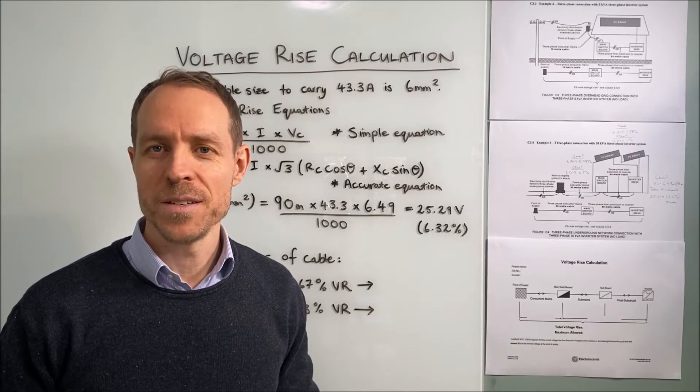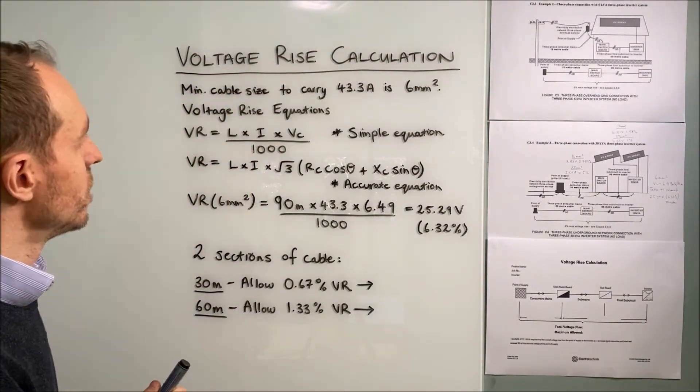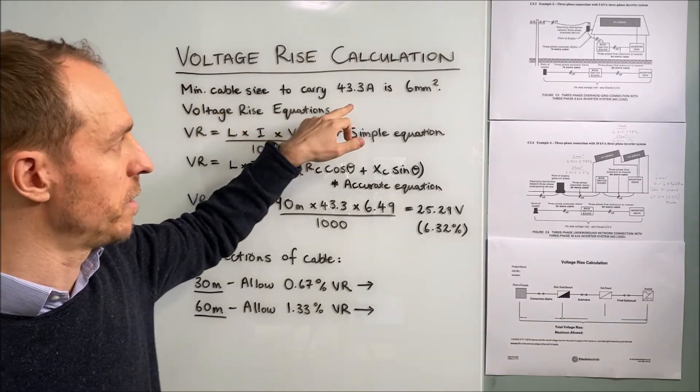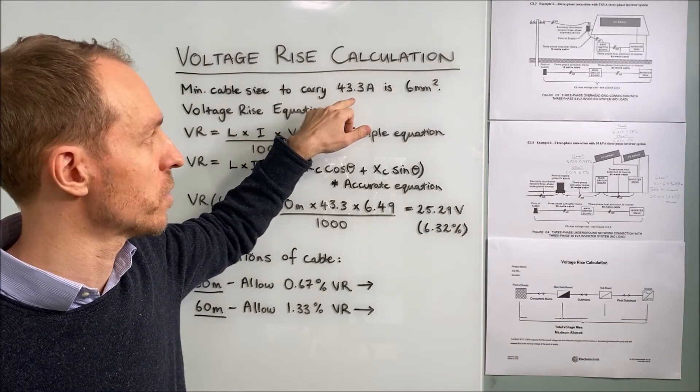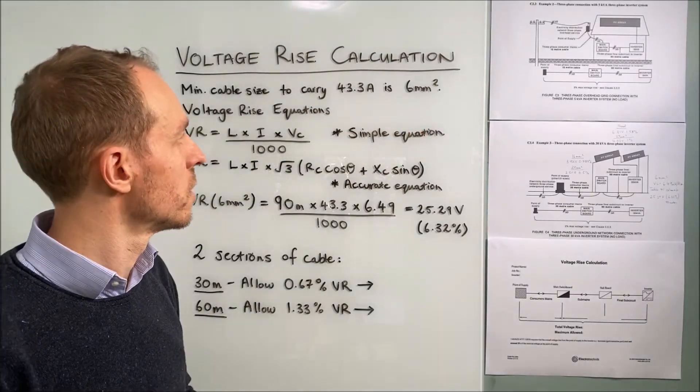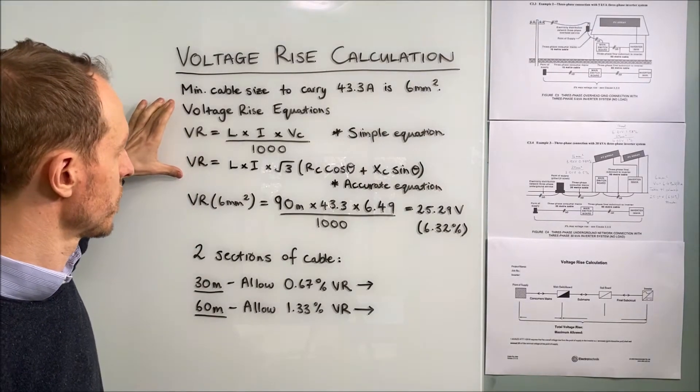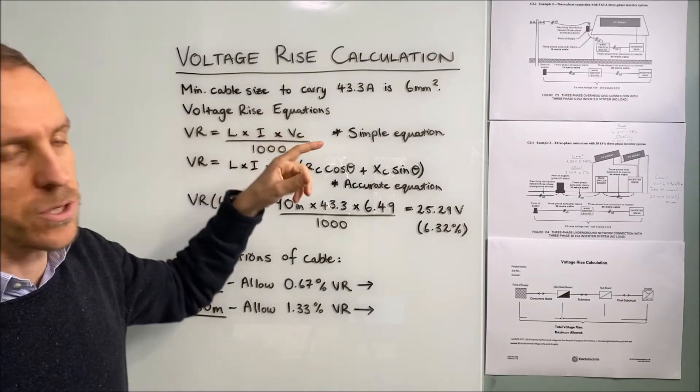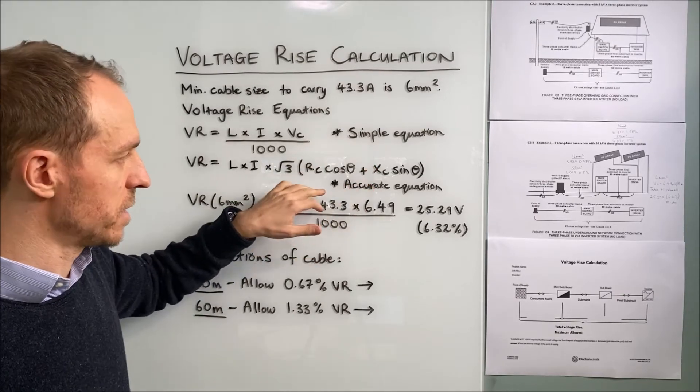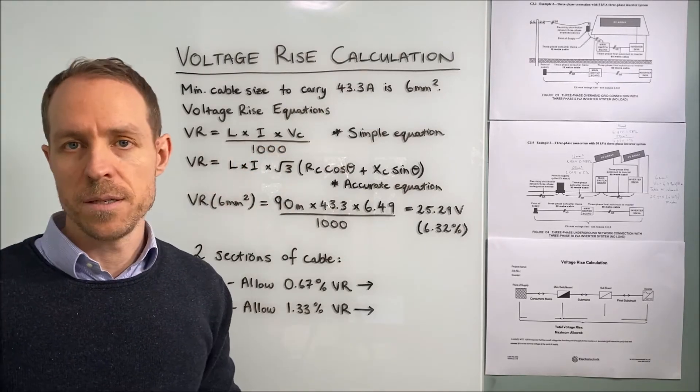Now I'm going to explain to you how to do the voltage rise calculations by hand. So we've worked out that the minimum cable size to carry the inverter output current of 43.3 amps is 6mm squared. So just to explain the voltage rise equations, there are two equations you could use. There's what we term as the simple equation and there's an accurate equation. The simple equation is obviously a lot easier to use by hand. You just need this VC value which is taken from the standard AS3008.